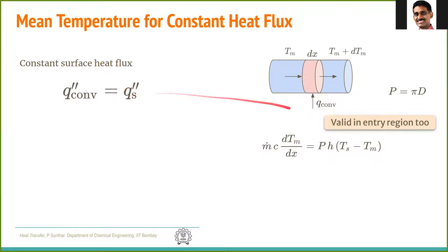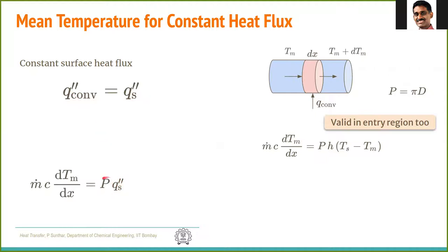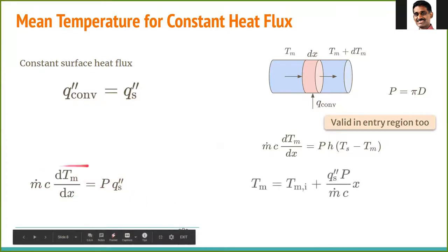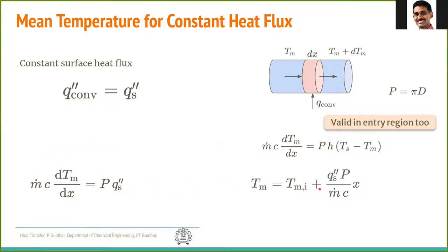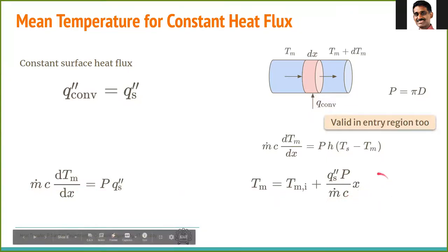When constant heat flux boundary condition is used, the convective heat transfer coming into this elemental disk equals the imposed heat flux at the wall, Q″s. So we can write H times (Ts minus Tm) divided by Q″s as a constant. Both terms are constant, and therefore we can integrate this expression to find it is simply a linear function of X.